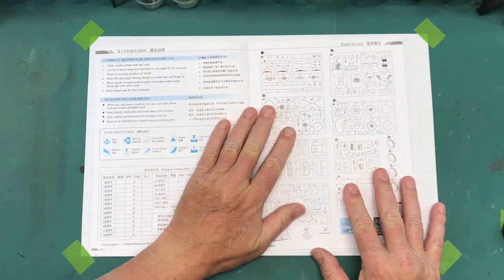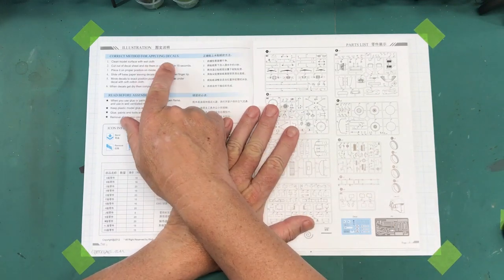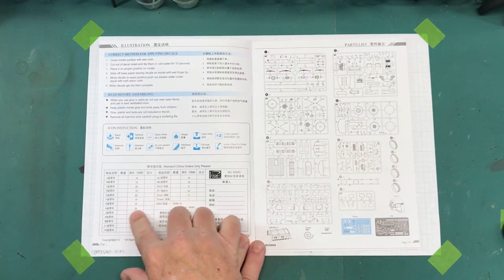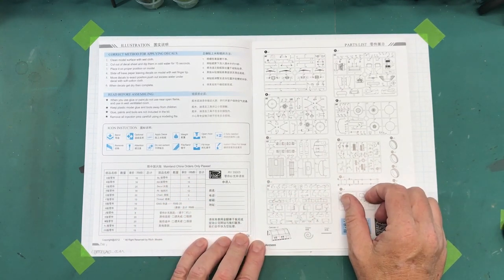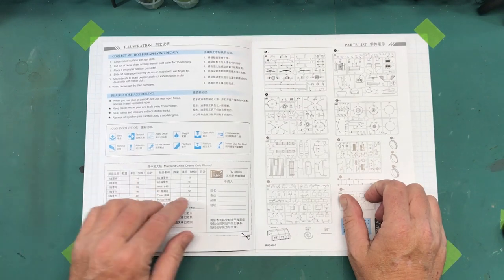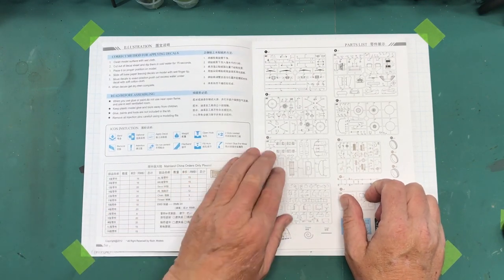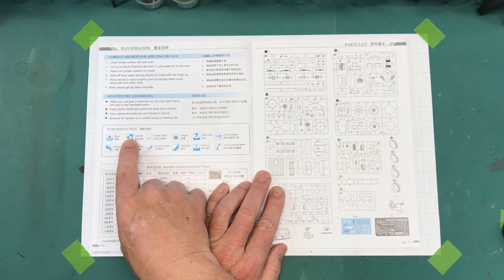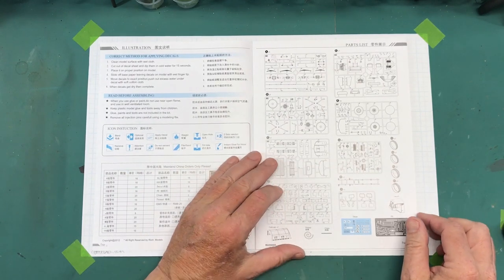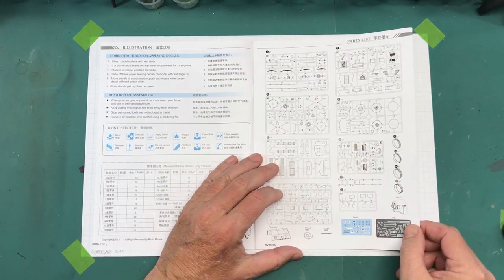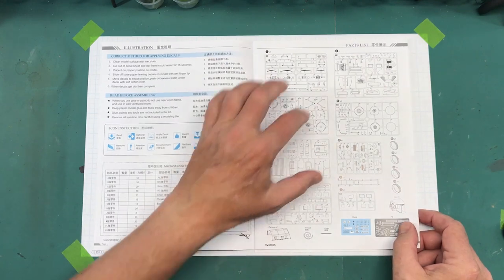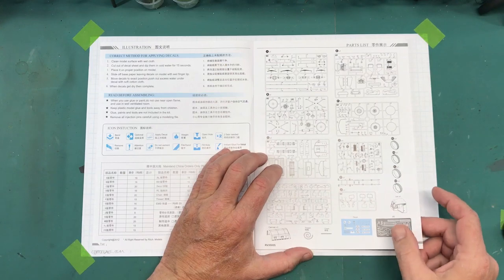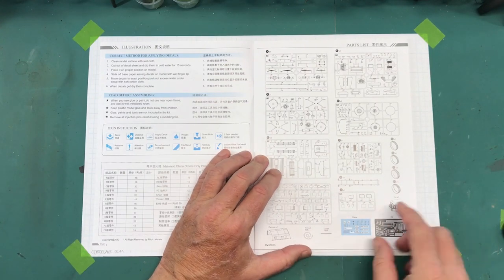On the inside we have the usual stuff. Correct method for applying decals. Looks like you can order extra spare parts, maybe, but only on mainland China. The icon instructions, pretty typical for modern instructions. Parts layout, all the individual parts that are individually wrapped. Photo etch and decals. There's some thread and some small chain.